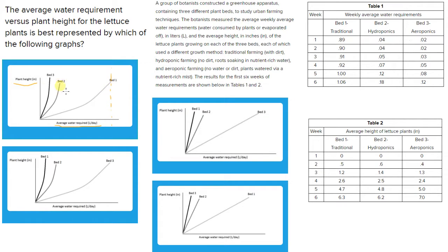Then we would expect that bed two would use slightly more water than bed three. So bed two would be second, and bed three would be third, the least far along on the x-axis, which is accurate in this answer choice. So then looking at it next, it's hard to see the heights here with the dots, so I'm just going to clear that up.